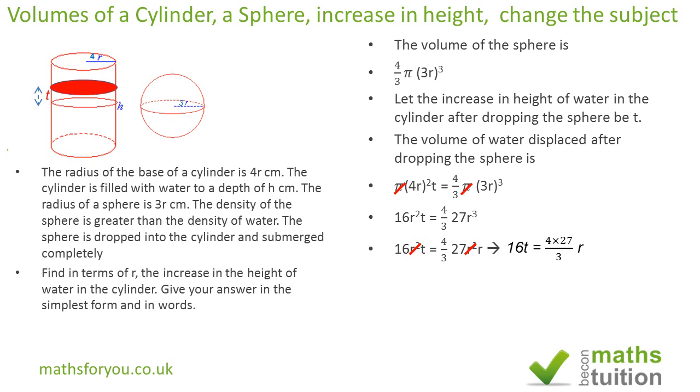If we then divide both sides by 16, we end up with T is equal to 4 times 27 divided by 3 times 16, not forgetting the R there.